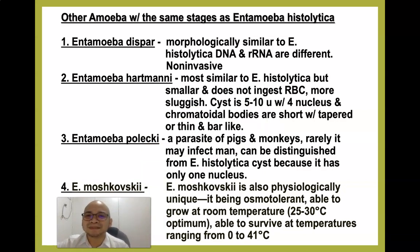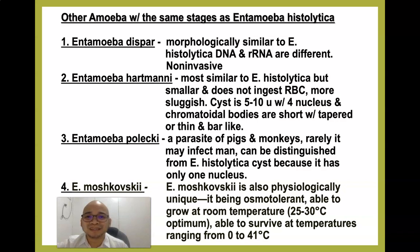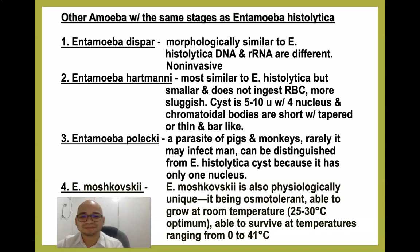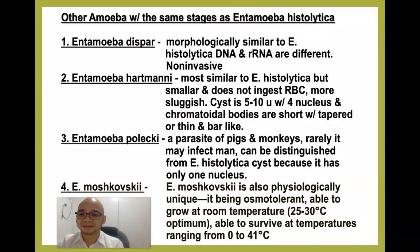Other amoeba similar to E. histolytica include: Entamoeba dispar — morphologically the same but genotypically different and non-invasive. Entamoeba hartmanni is most similar to E. histolytica but smaller; hartmanni does not ingest RBC and is more sluggish. Entamoeba polecki is found among pigs and monkeys and rarely infects humans; it can be distinguished by having only one nucleus. Entamoeba moshkovskii is physiologically unique — osmotolerant and able to grow at room temperature, surviving temperatures ranging from 0 to 41 degrees centigrade. That concludes the first part of intestinal protozoans.